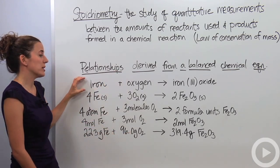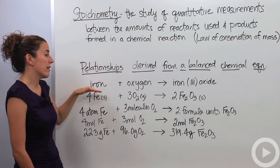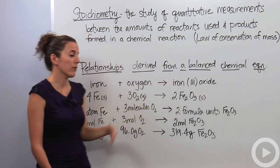Let's look at the first thing we can get. We can actually get the names of the compounds and the elements. We say iron reacts with oxygen to form iron(III) oxide.